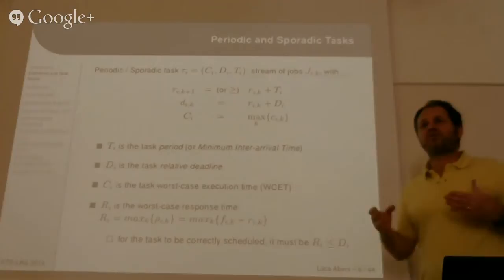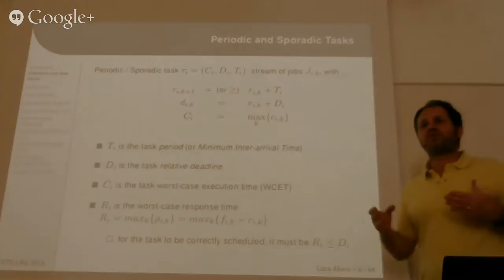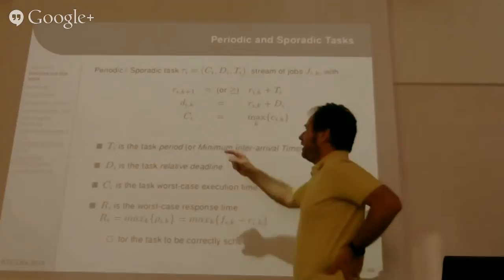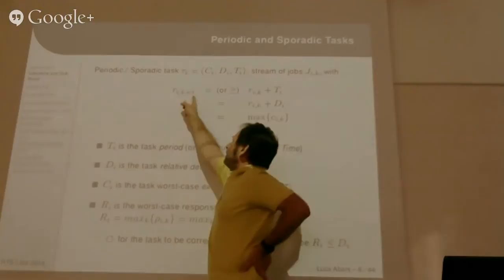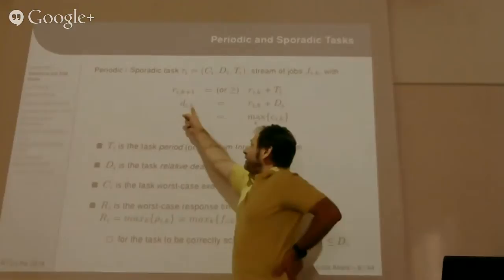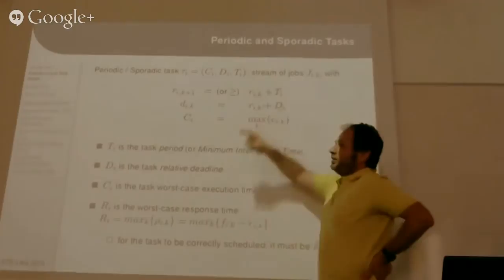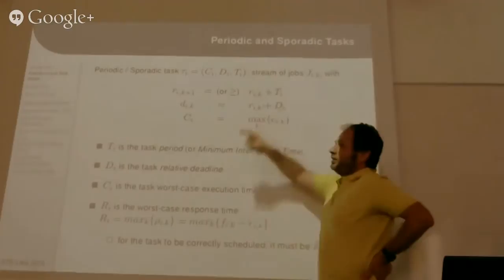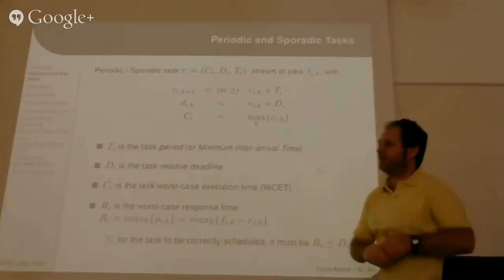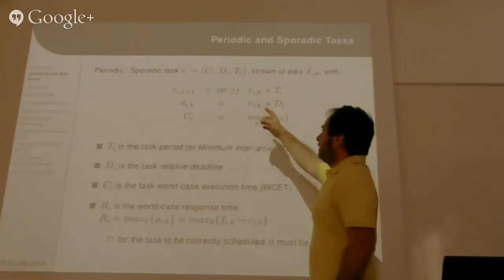A job respects its deadline if the finishing time is smaller or equal than the absolute deadline of the job. We can also define a response time row_ik as the difference between the finishing time and the arrival time. A real-time task is a sequence of jobs, and this sequence often has some cyclical structure. We can have periodic tasks or sporadic tasks. A periodic task has arrival time R_i(k+1) equal to R_ik plus a period. The absolute deadline is equal to the arrival time plus a constant relative deadline D_i. The worst-case execution time C_i is the maximum among all job execution times.